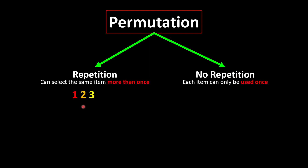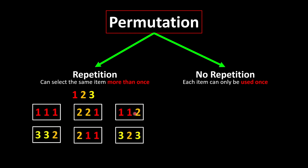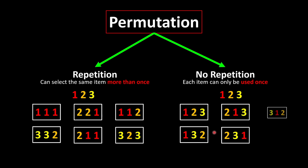Let's say we have 1, 2, and 3. We can rearrange them to form different numbers. Since this is with repetition, we can use a number more than once — for example, 1-1-1. But without repetition, all numbers can only be used once, so no number is repeating.